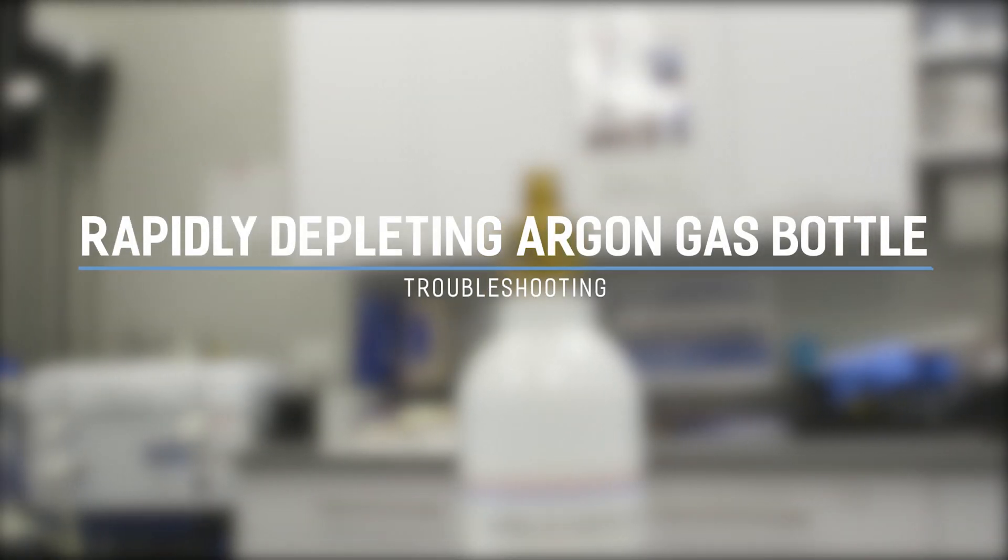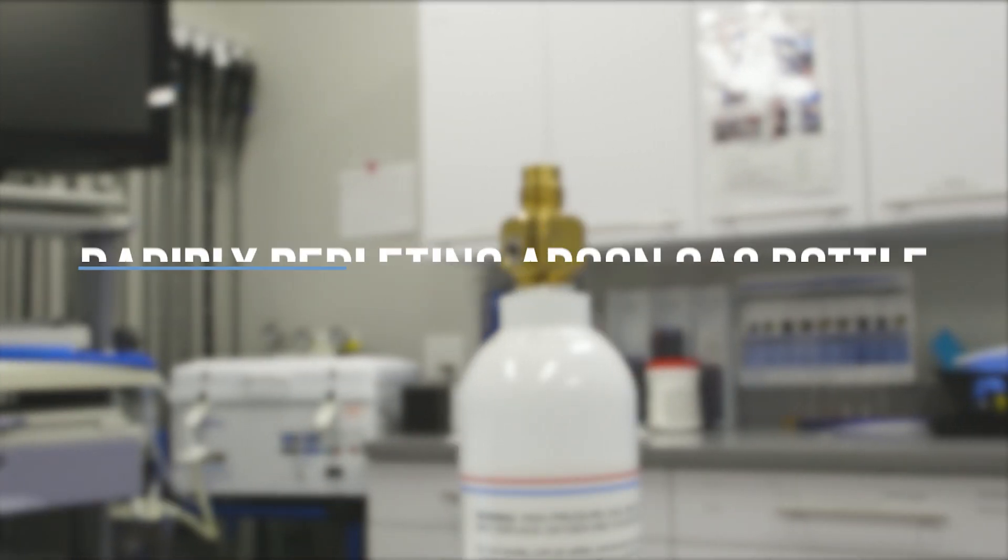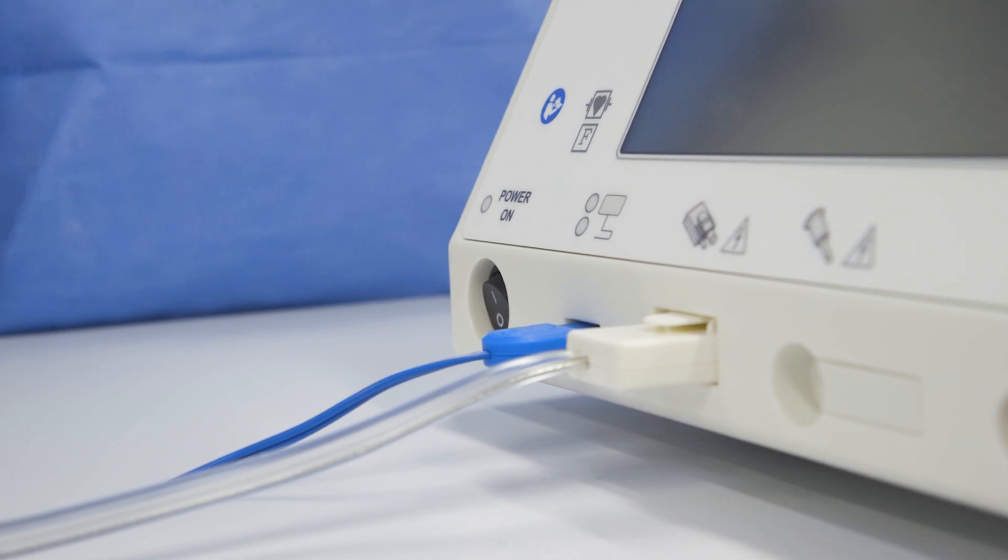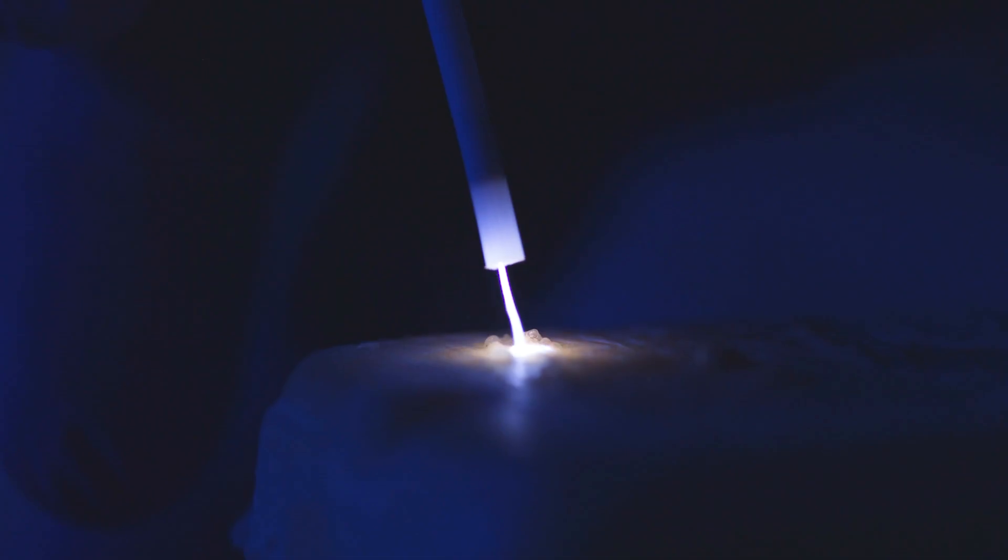Rapidly depleting argon gas bottle. If you observe that your argon gas bottle is rapidly depleting, verify that the GI-4000 is turned off after each case where the argon method is used.